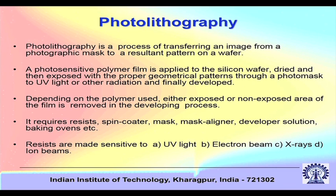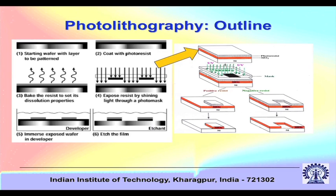Photoresists are chemicals sensitive to ultraviolet light, electron beam, X-rays, or ion beam. Based on the energy source used, these are called UV lithography, e-beam lithography, X-ray lithography, or ion beam lithography.